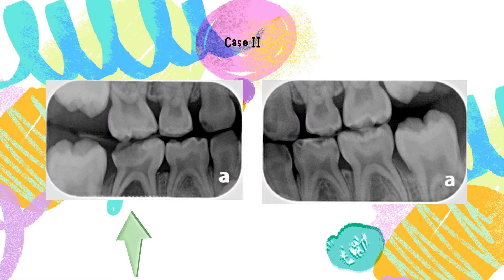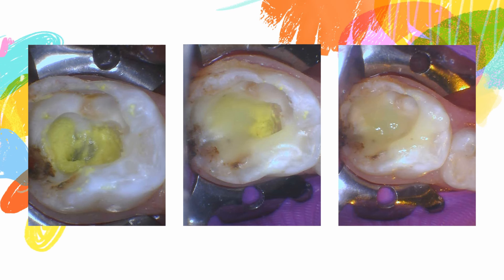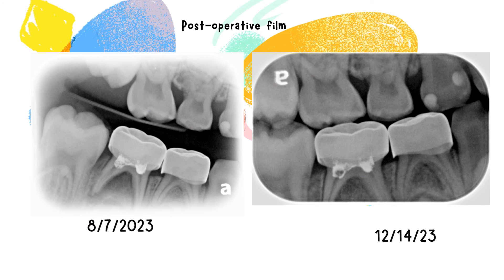The second case is also tooth number T or 85, showing caries and decay excavation revealing orifices in the pulp chamber. After phosphoric acid etching and drying, the LSTR 3-mix paste was applied and the tooth was restored with a stainless steel crown. A three-month recall shows resolution of symptoms and some bony fill-in around the distal root.